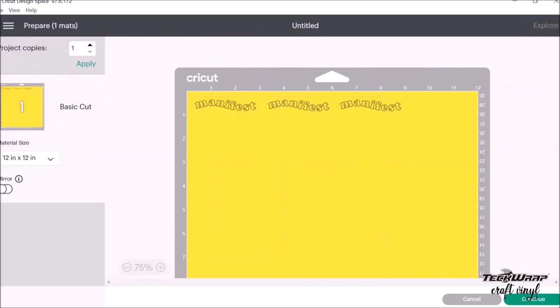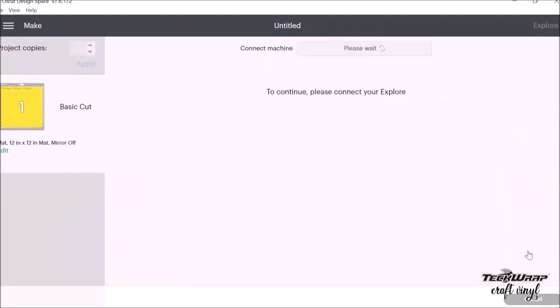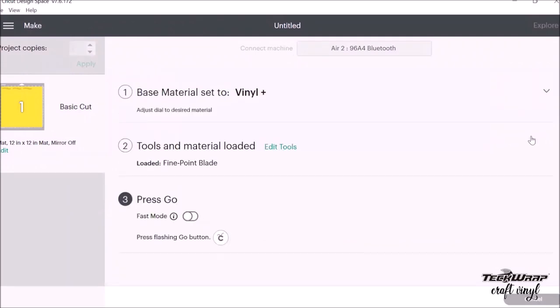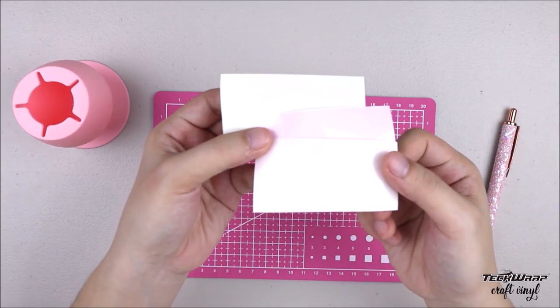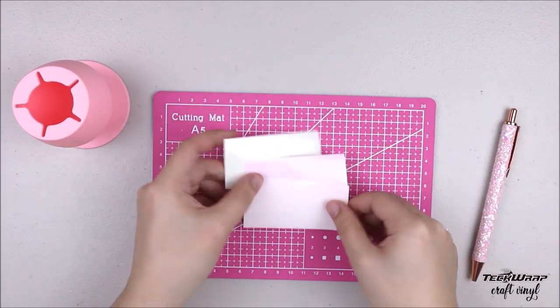Now it's time to cut the design onto the vinyl and I just use the default Vinyl Plus setting on my Cricut machine when doing so. Once the cutting is complete, remove the vinyls from the cutting mat.